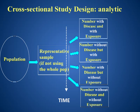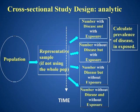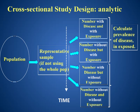The first and second sections are used to calculate prevalence of disease among those who are exposed. The third and fourth sections are used to calculate prevalence of disease among those who are not exposed.